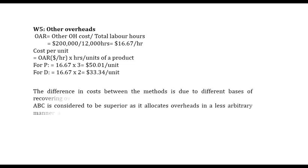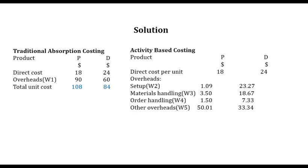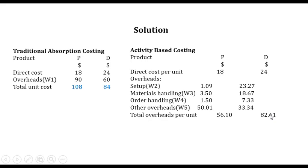So that's how we compute it. Going back to our solution, other overheads are $50.01 and $33.34. We sum all the overhead components for each product: total overheads for P sum to $56.10 and for D we sum them to obtain the total figure. Then we compute total product cost by adding direct cost to overheads, obtaining $74.10 for P and $106.61 for D under ABC.